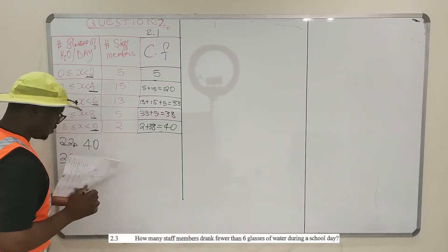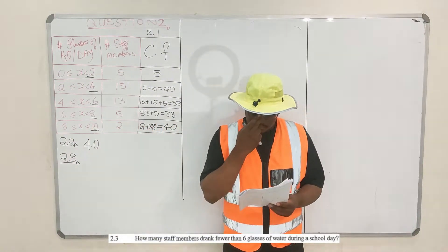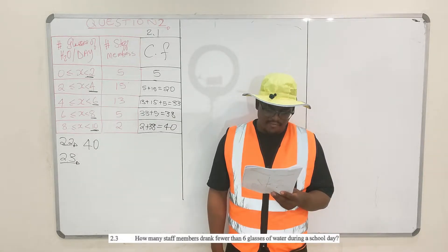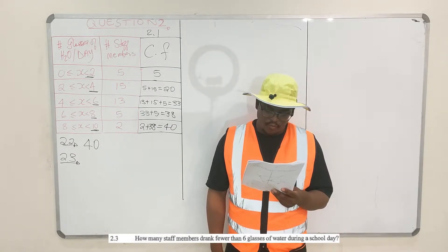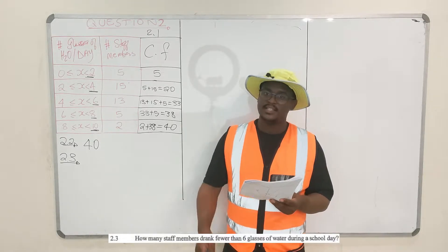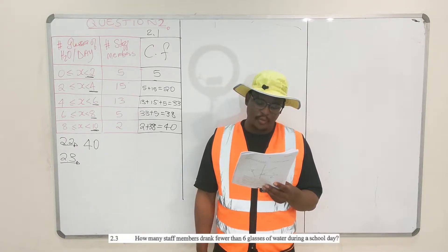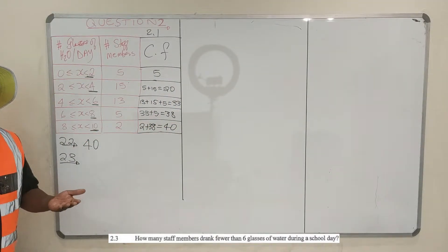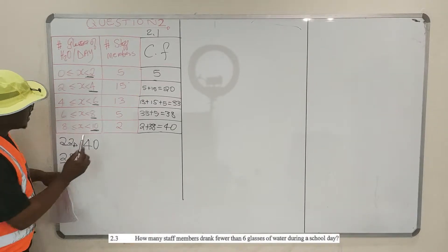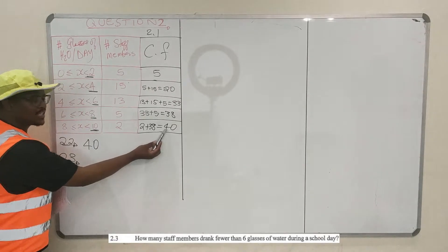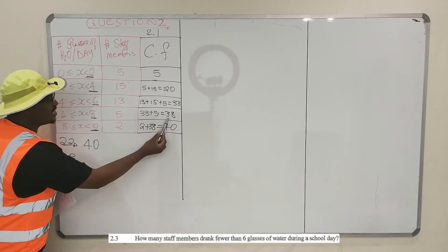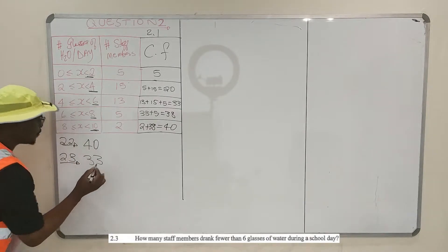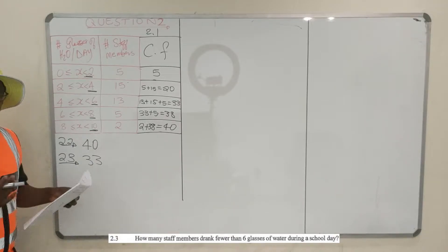Move to 2.3: how many staff members drank fewer than 6 glasses of water during a school day? All of those in the first three rows drank less than 6 glasses of water a day. So the answer is 33 staff members that drank less than 6 glasses of water a day.